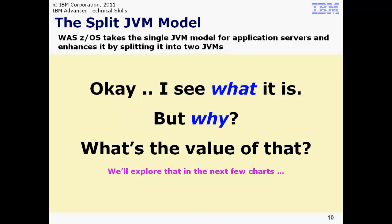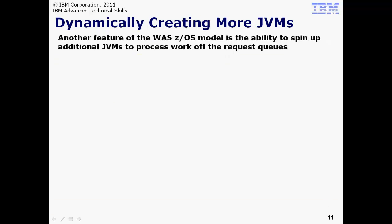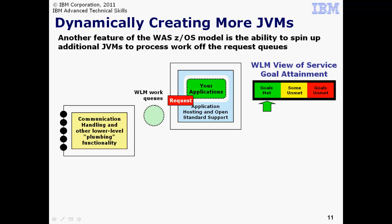You may be thinking, OK, I see what it is, but I'm still not clear on why I should care. That we'll explore next. The first value statement has to do with the ability to dynamically create additional Servant regions based on ZWM goals. Imagine an environment with a controller and a Servant, with ZWM between the two. Requests are coming in and being serviced. ZWM is watching all the activity on the system while keeping an eye on the service goals you've defined for everything, including WAS. At this level of requests, everything is fine. ZWM sees the goals as being met. Now imagine things speed up quite a bit.